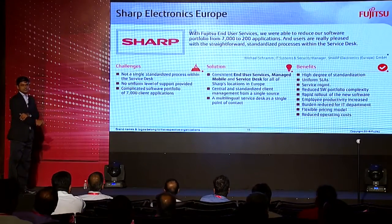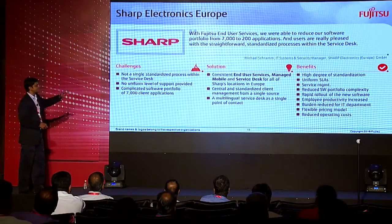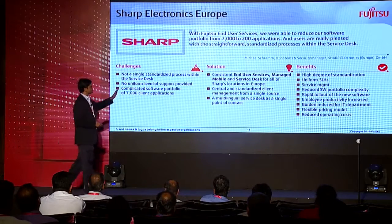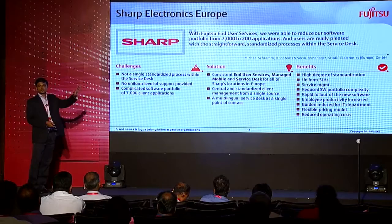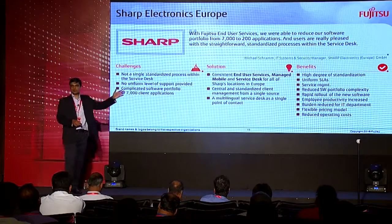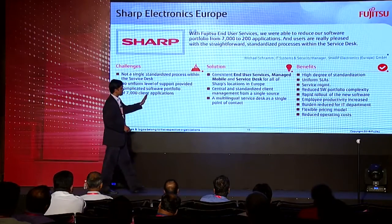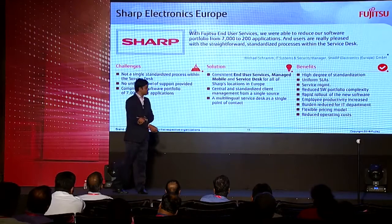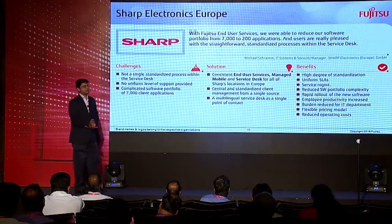One example: Sharp Electronics Euro. Challenges included no single standardized process within the service desk, no uniform level of support, and more than 7,000 applications. Fujitsu provided consistent end-user services and managed mobile and desk services for all of Sharp's Euro locations. They benefited from the highest level of standardization, uniform SLAs across most product lines, complete end-to-end services from contract signing through SLA management, and a flexible pricing model with reduced operating costs. Applications were reduced from 7,000 to just 200.